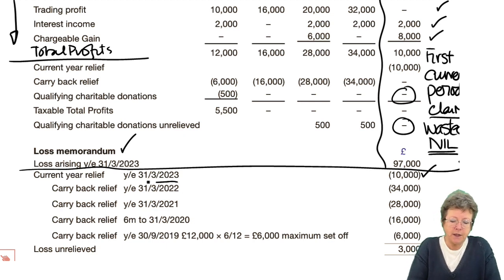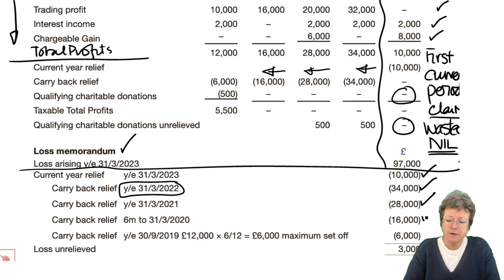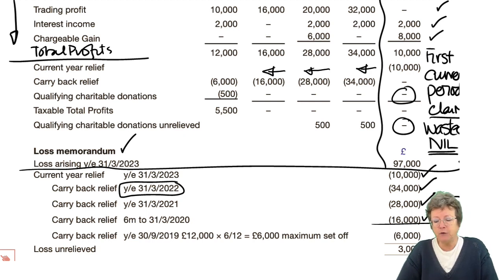So the first year would be this one — going this way, 34,000. Then going that way, 28,000. Now we're going six months — 16,000. At some point along there, it's worth working out how much you've got left to make sure you don't use too many, because you've only got 97,000. Do a little subtotal to see what's going on.